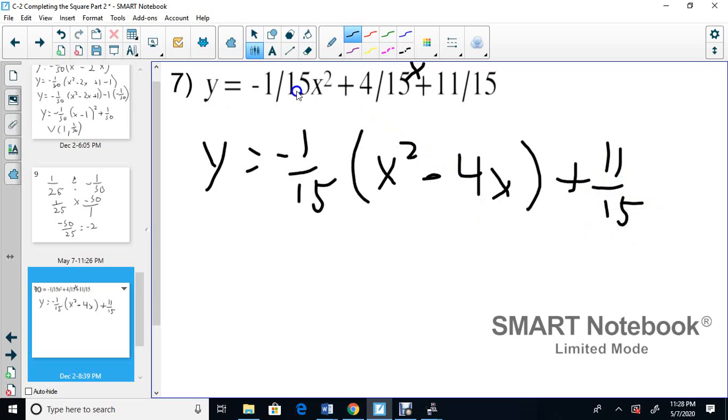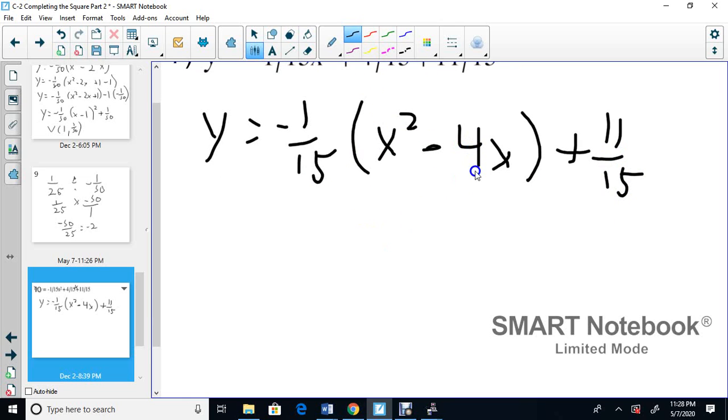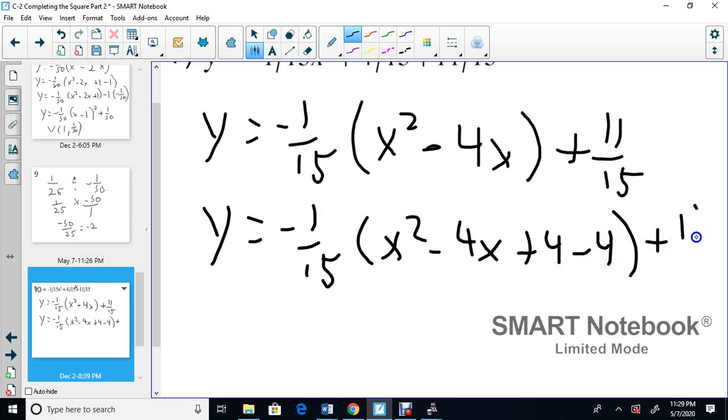So now the 4 is here, so if it has the same bottom, just put it here. And then you get x squared minus 4x. Now we're going to take the 4 divided by 2 is 2 and square it. And so y equals negative 1/15, x squared minus 4x. We're going to add 4 and subtract 4, plus 11 over 15.